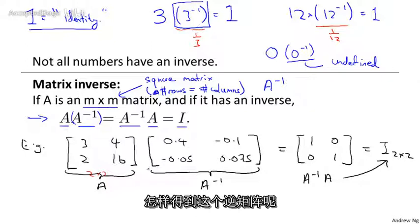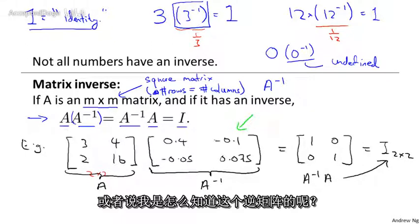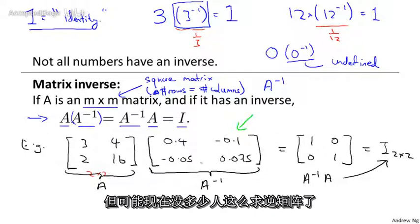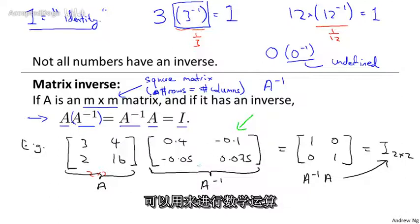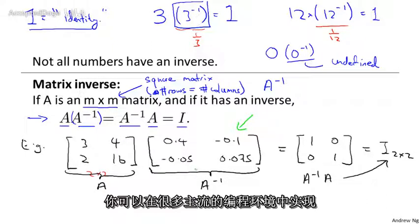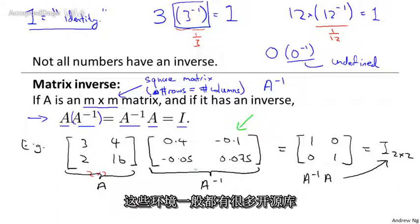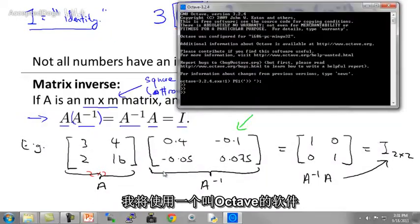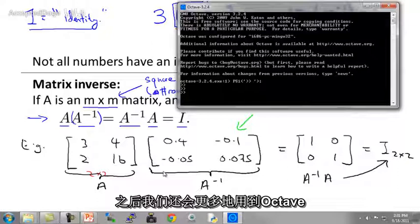So how did I find this inverse? How did I come up with this inverse over here? It turns out that sometimes you can compute inverses by hand, but almost no one does that these days. And there's very good numerical software for taking a matrix and computing this inverse. So again, this is one of those things where there are lots of open source libraries that you can link to from any of the popular programming languages to compute inverses of matrices. Let me show you a quick example of how I actually computed this inverse using software called Octave. We'll see a lot more about Octave later.